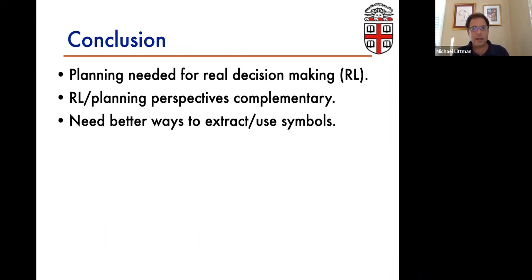So the upshot here is that we need something like planning for real decision making, real high deep sequences of actions to solve problems in the real world. The RL and planning perspectives are really complementary and they belong together. They are necessarily of a piece. Though at this point we still need better ways to extract and use symbols to connect this low level soup to the higher level logical representations. Thank you.